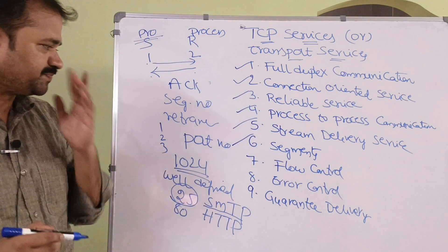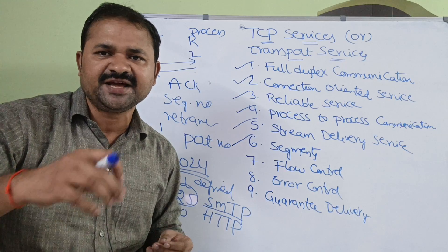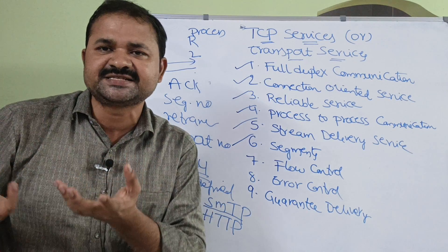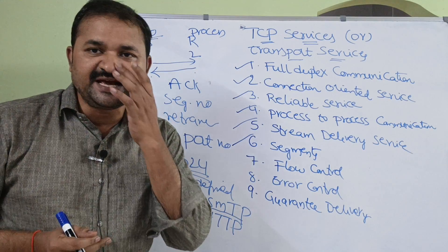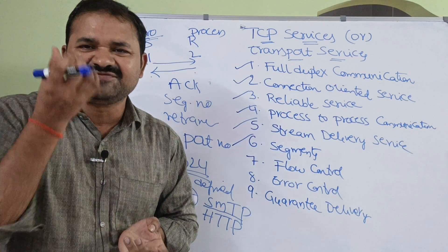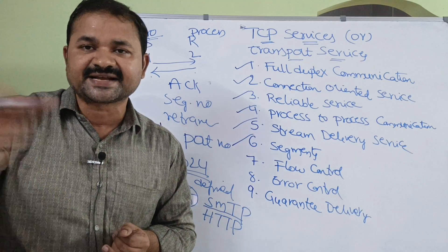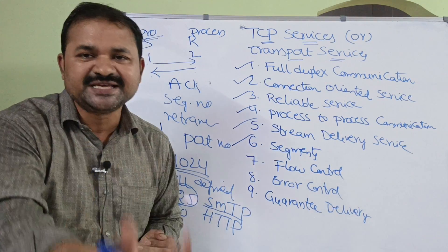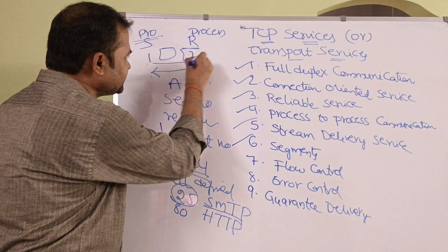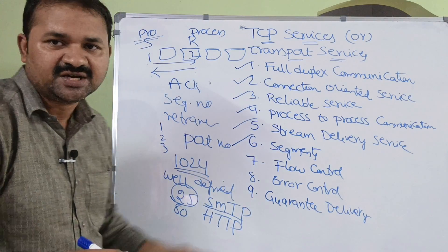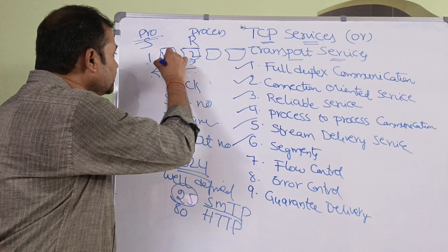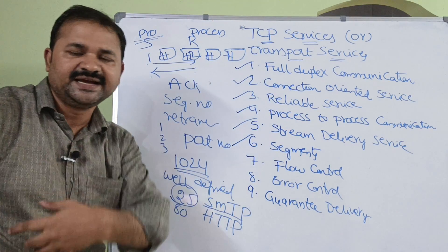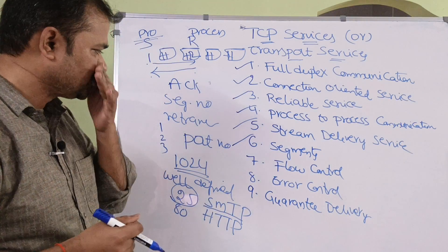The next service is segmentation. The application layer, which sits on top of the transport layer, represents data in the form of messages, while the network layer sits below. When the application layer sends a large message to the transport layer, that message is split into various smaller segments. The transport layer adds a header to each segment and transmits each segment down to the network layer.